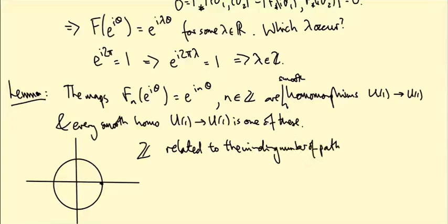So this Z here is related to the winding number of paths, let's say loops in U(1).